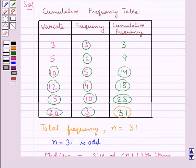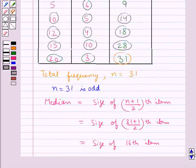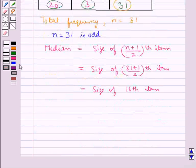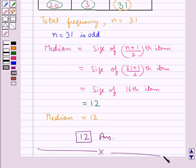Now in the table as you can see that we don't have any cumulative frequency as 16. So we will look for the cumulative frequency more than 16 and that would be 18. Now for 18 the corresponding variate is 12. So we would say that the size of the 16th item is 12. Thus we get the median is equal to 12. So this is our final answer. This completes the session. Hope you have understood the solution for this question.